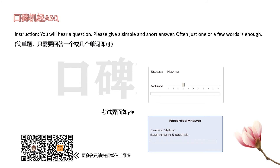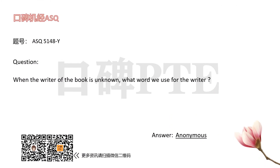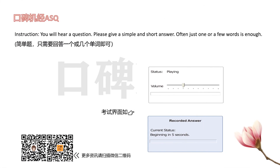When the writer of a book is unknown, what word do we use for the writer? What piece of equipment would you use for floating on the sea?